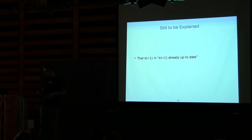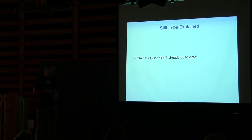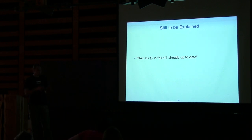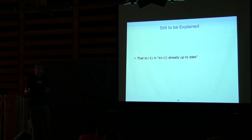This hopefully explains what 'dir' means in the 'dir is already up to date' message. The default target is the current directory — so it tells you 'the directory is up to date.' And when it's clean, it tells you 'the directory is clean.' Which kind of fits nicely.